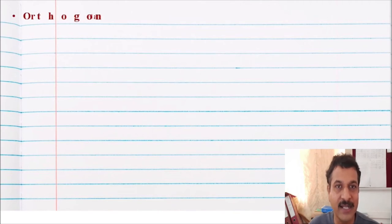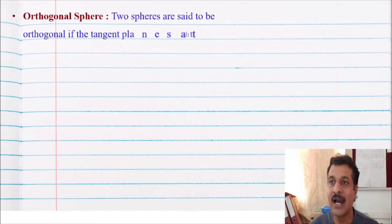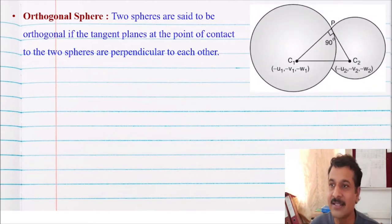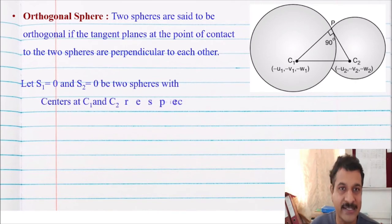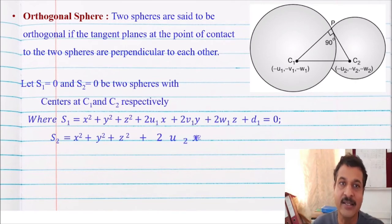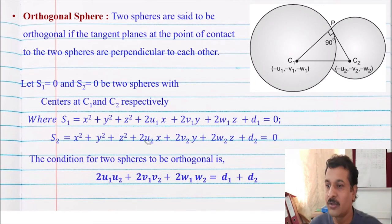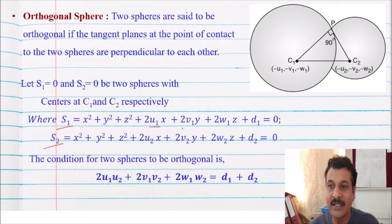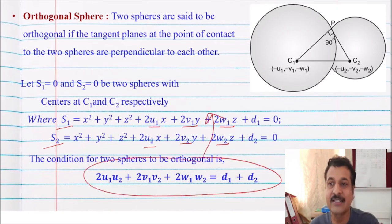Also remember orthogonal spheres. Two spheres are said to be orthogonal if the tangent planes at the point of contact of the two spheres are perpendicular to each other. The condition of orthogonality is: 2u1·u2 plus 2v1·v2 plus 2w1·w2 equal to d1 plus d2, where u1, v1, w1 and u2, v2, w2 are taken from the respective equations of spheres S1 and S2. If this condition is satisfied, the two spheres are orthogonal.